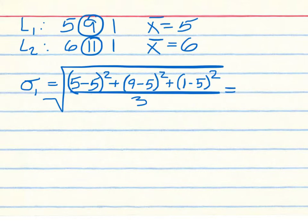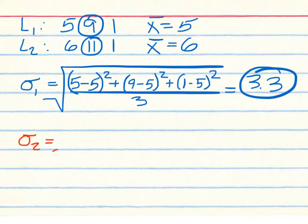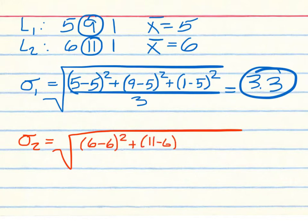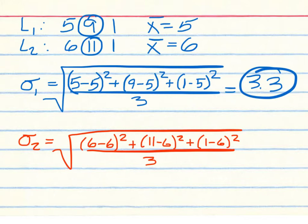And 1 minus 5 squared, all over 3 — take the square root. Standard deviation of List 1 is 3.33. For the standard deviation of List 2: 6 minus 6 squared, 11 minus 6 squared, and 1 minus 6 squared, all over 3, then take the square root. Standard deviation of List 2 is 4.1.